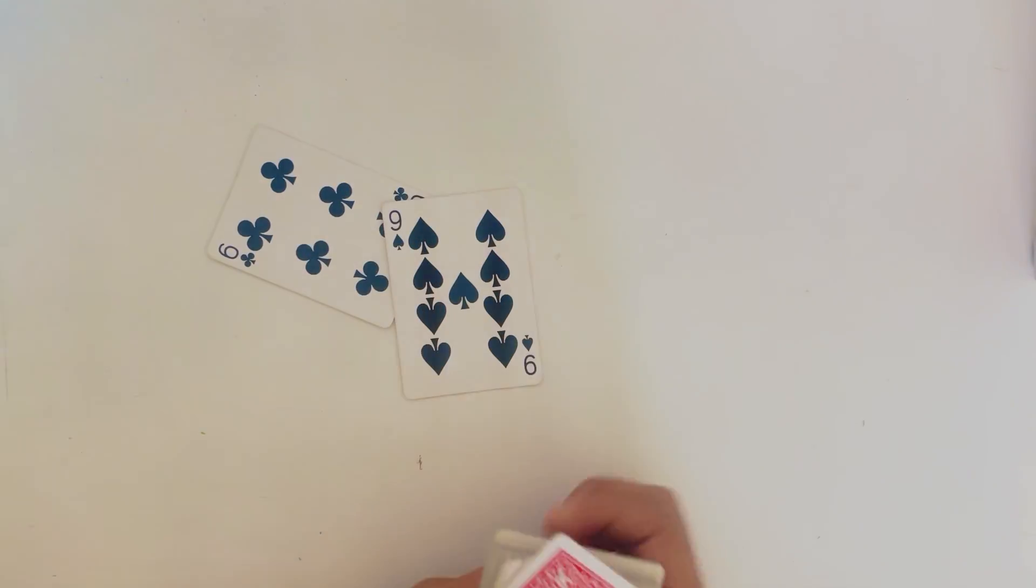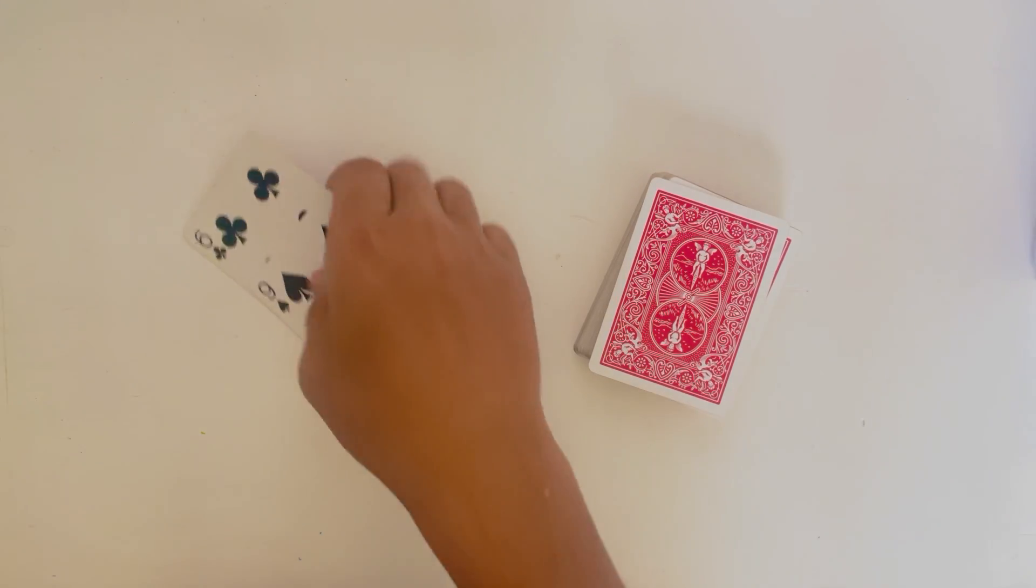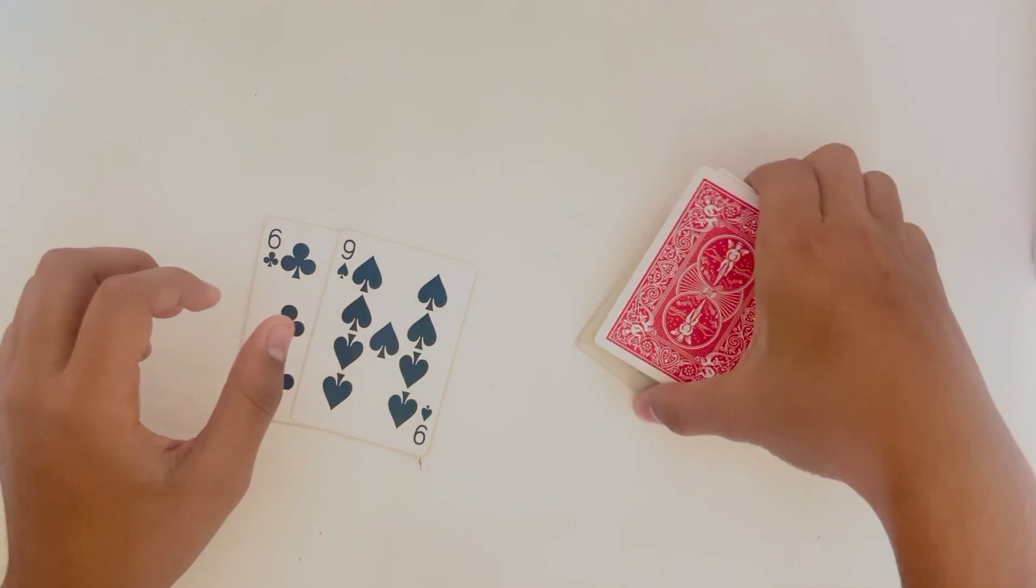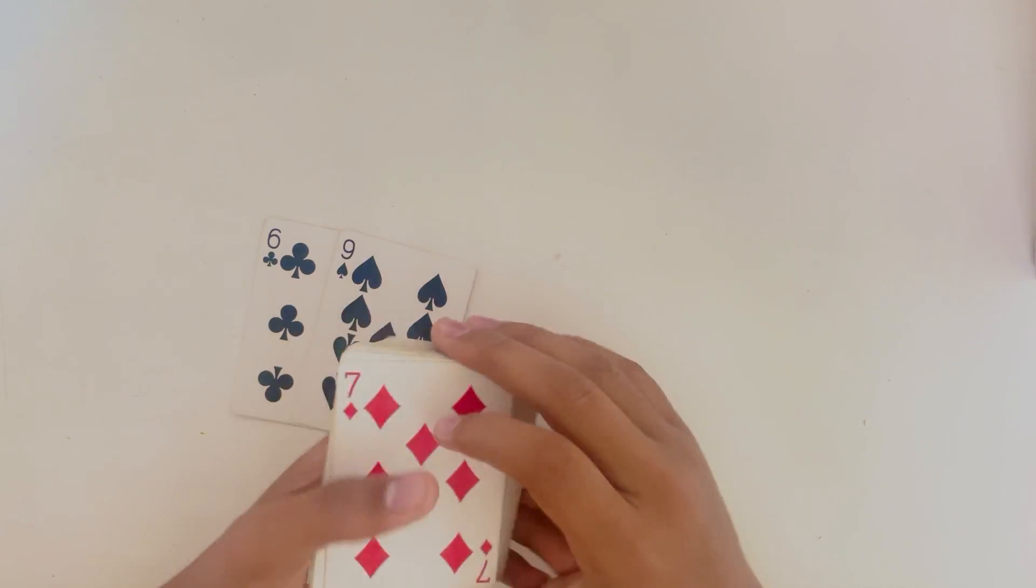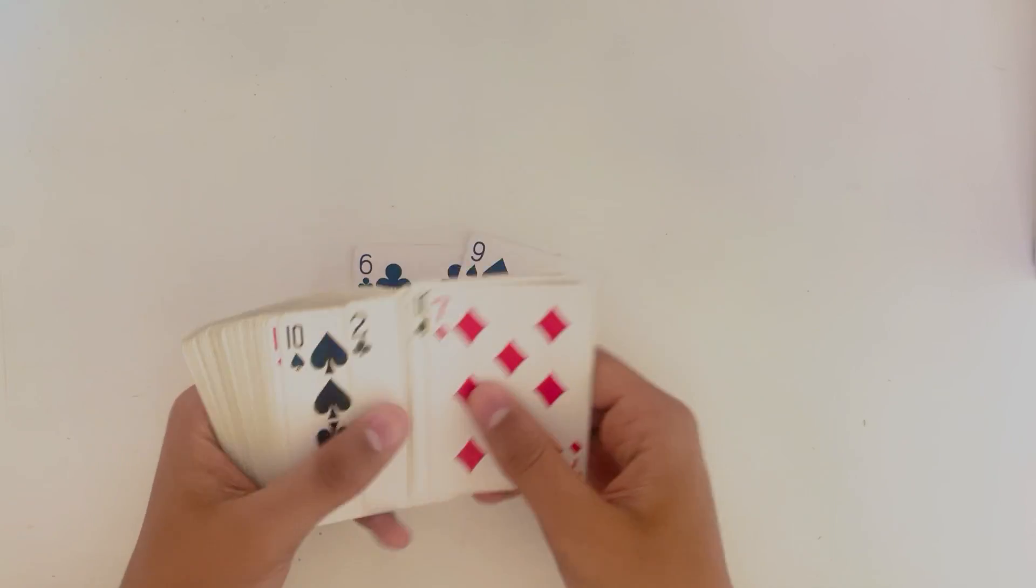So now I'm going to teach you guys how to do it. I don't know if you caught what I did but how you do it is you need to already prepare a black six and a black nine on the top and bottom of the deck.